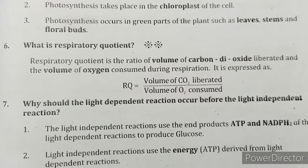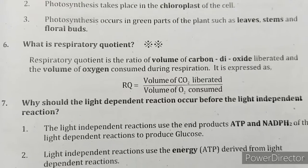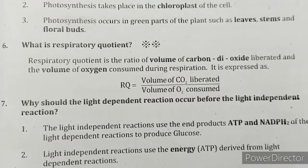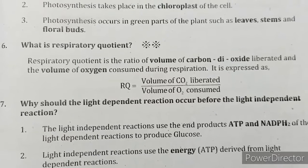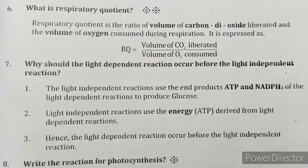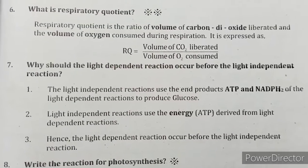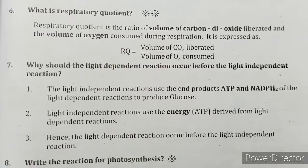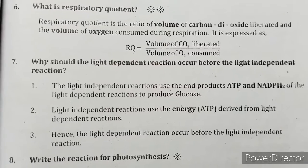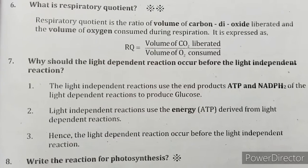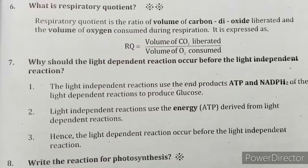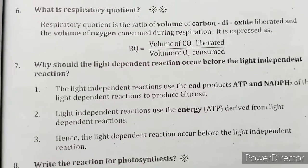Photosynthesis takes place in the chloroplast of the cell and occurs in green parts of the plant such as leaves, stems, and floral buds. What is respiratory quotient? Respiratory quotient is the ratio of the volume of carbon dioxide liberated to the volume of oxygen consumed during respiration. It is expressed as RQ = volume of CO2 liberated / volume of O2 consumed.